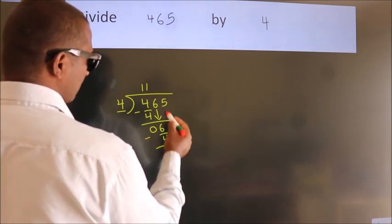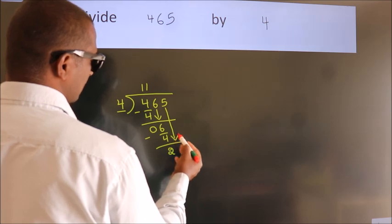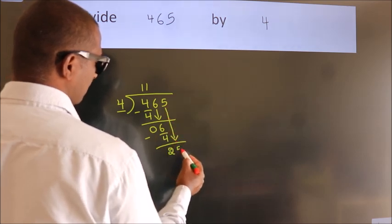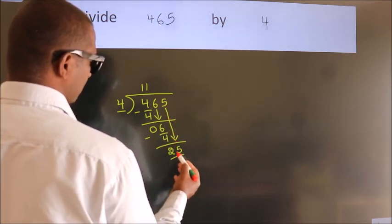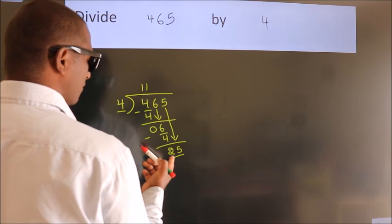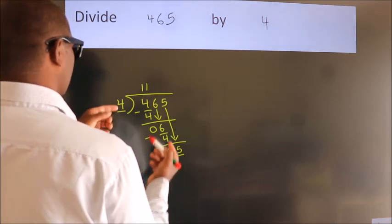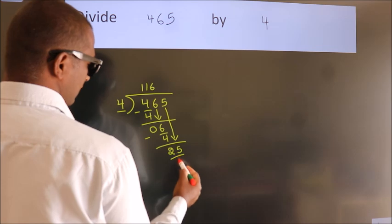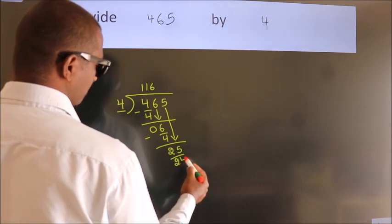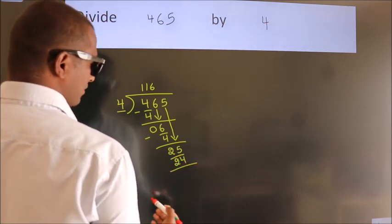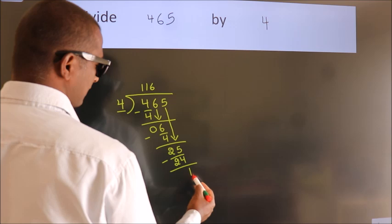After this, bring down the beside number. So 5 down. So 25, a number close to 25. In 4 table is 4, 6, 24. Now we subtract. We get 1.